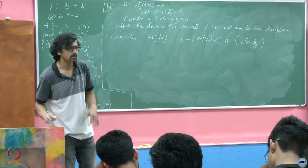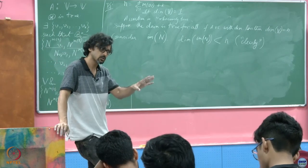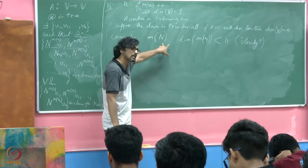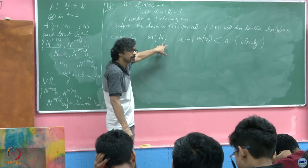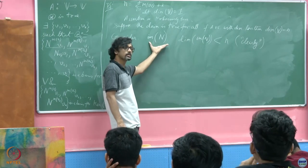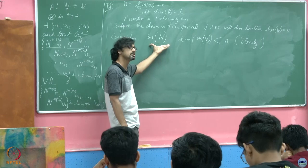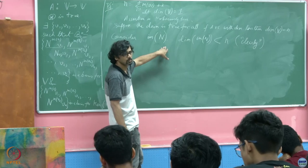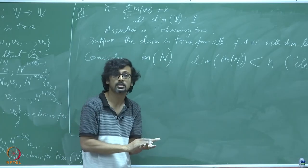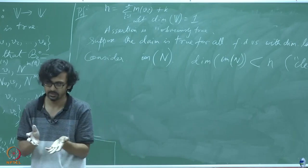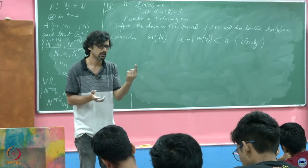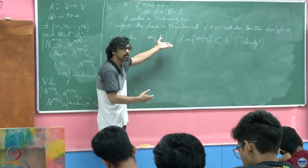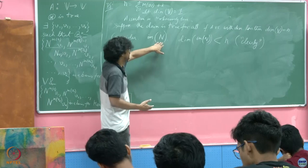What can the dimension of the image of N be at maximum? The dimension of V, which is n. But can the dimension of the image of N be n? If it were, then it would be a non-singular matrix, and there would be nothing in its kernel other than 0. But this matrix has all its eigenvalues equal to 0. So the geometric multiplicity of any eigenvalue must be at least 1 — at least along one direction it maps everything to 0. So the kernel is non-trivial.